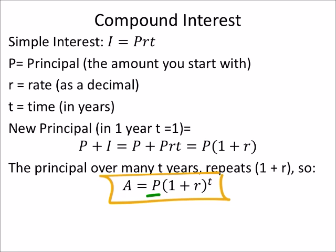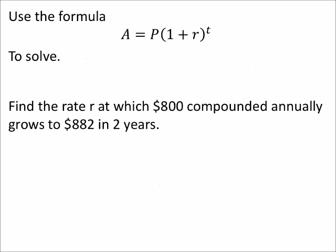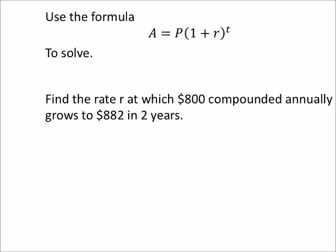So here's the problem: we are going to use that formula. Find the rate at which $800 compounded annually grows to $882 in two years. So A, and I guess I forgot to mention this, A is the future amount of the account, the new principle after however many years we're looking at. So A in this case is $882, so we'll put that in.